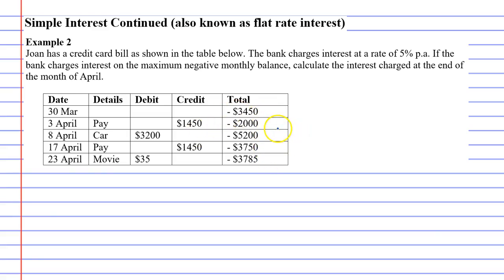they want to charge it on the highest bill during the month. So they're going to charge it on the negative $5,200 because they can make the most money. When you look at the bill, you'll notice credits and debits. A credit is when you put money into the bill. They owed $3,450, put money in, and the bill went down. But on the 8th of April, they spent $3,200 on a car and the bill got really big again. This is the number we're going to use to calculate the interest.